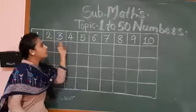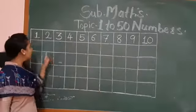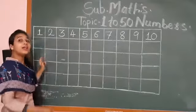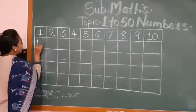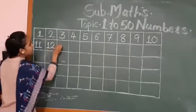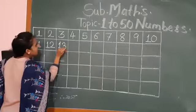These are numbers from 1 to 10. After ten, which number will come here? One tenth one. Eleven. One tenth one, eleven. Then one tenth two, twelve. One tenth three, thirteen.